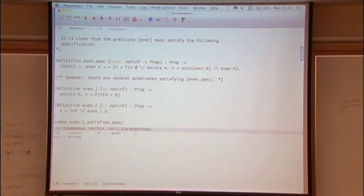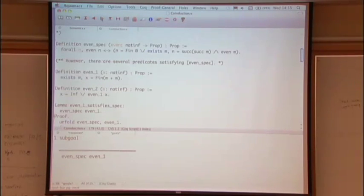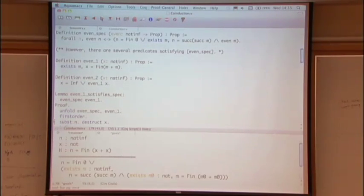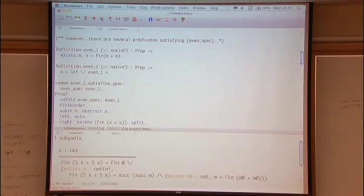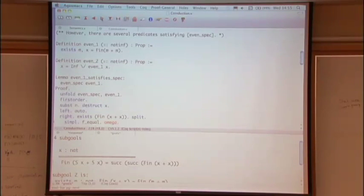And so whatever predicate even over NAT INF satisfies the specification, is a solution to this set of rules and axioms, if this is true. Even of n is equivalent to n is finite zero, or there exists an m. And it's easy to see that there are several predicates that satisfy this spec. And here are two of them.